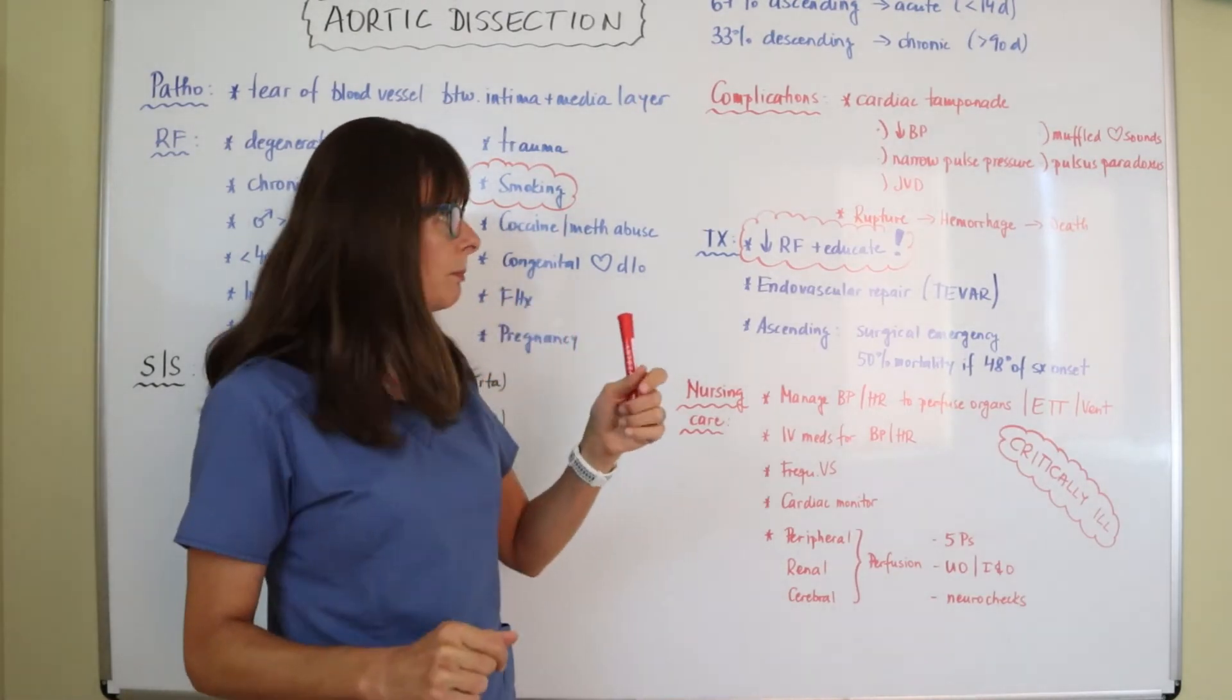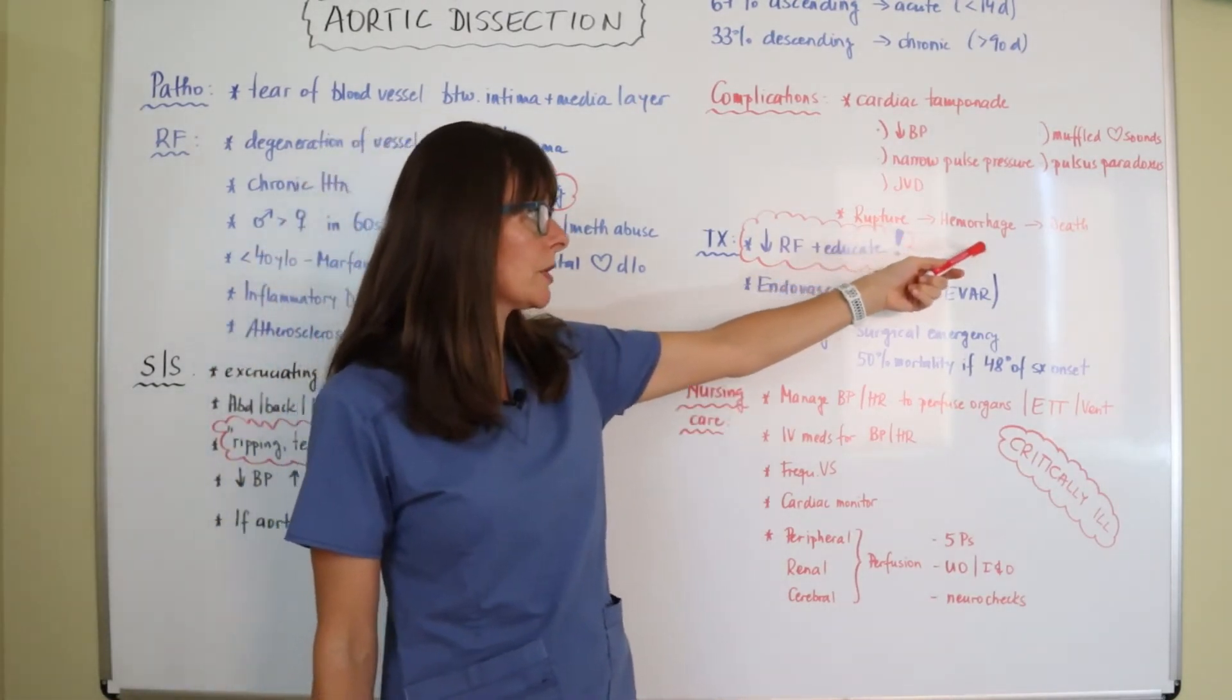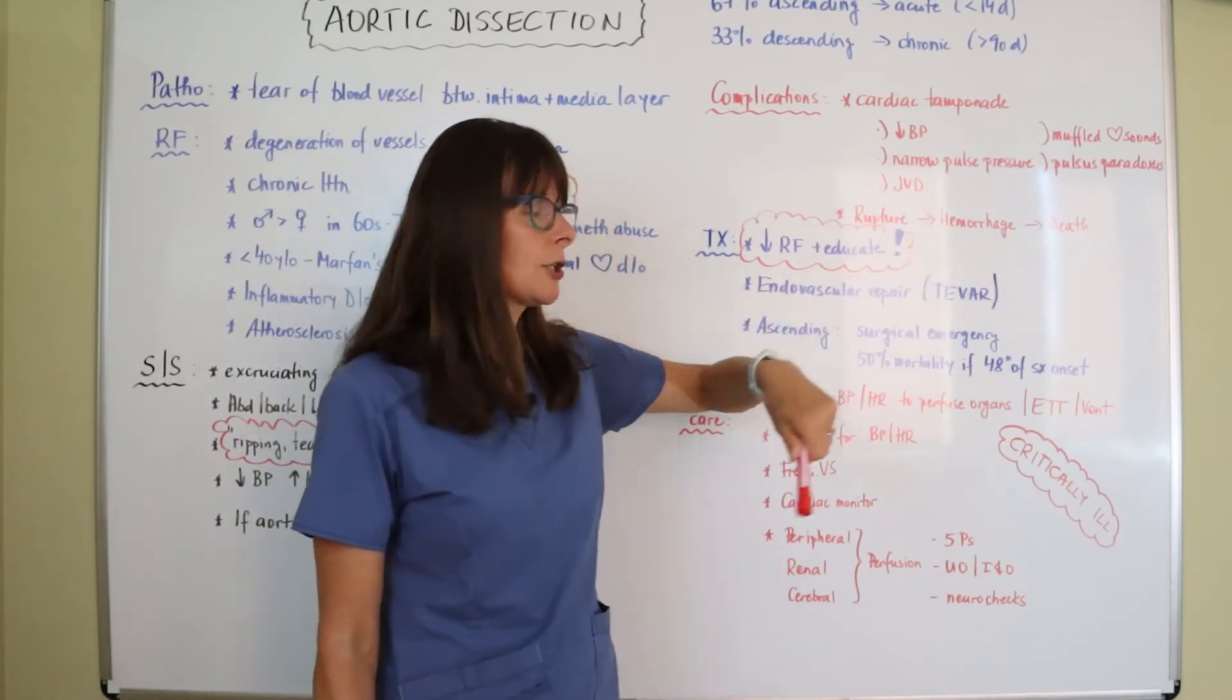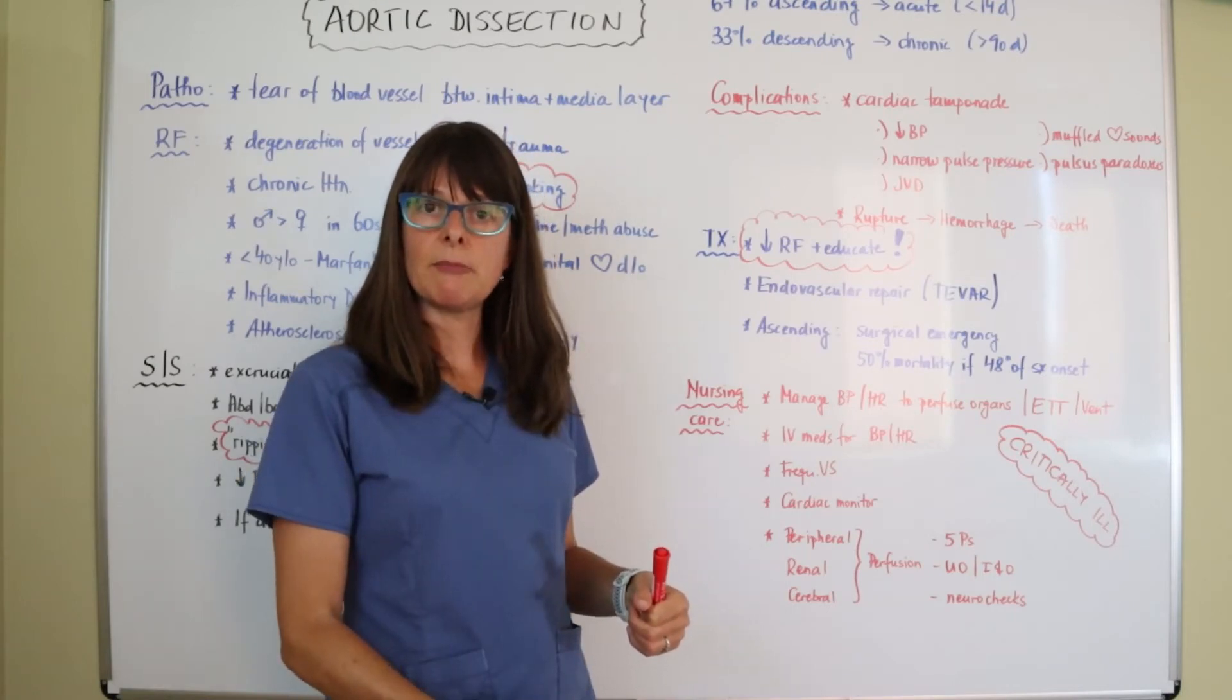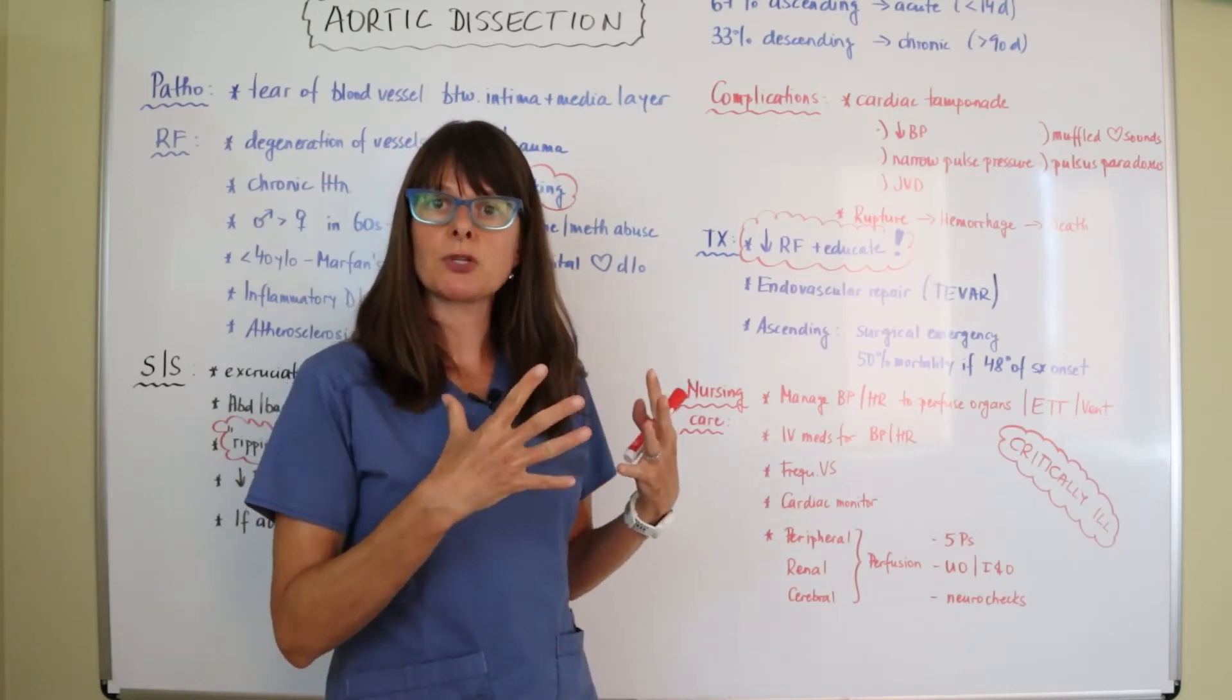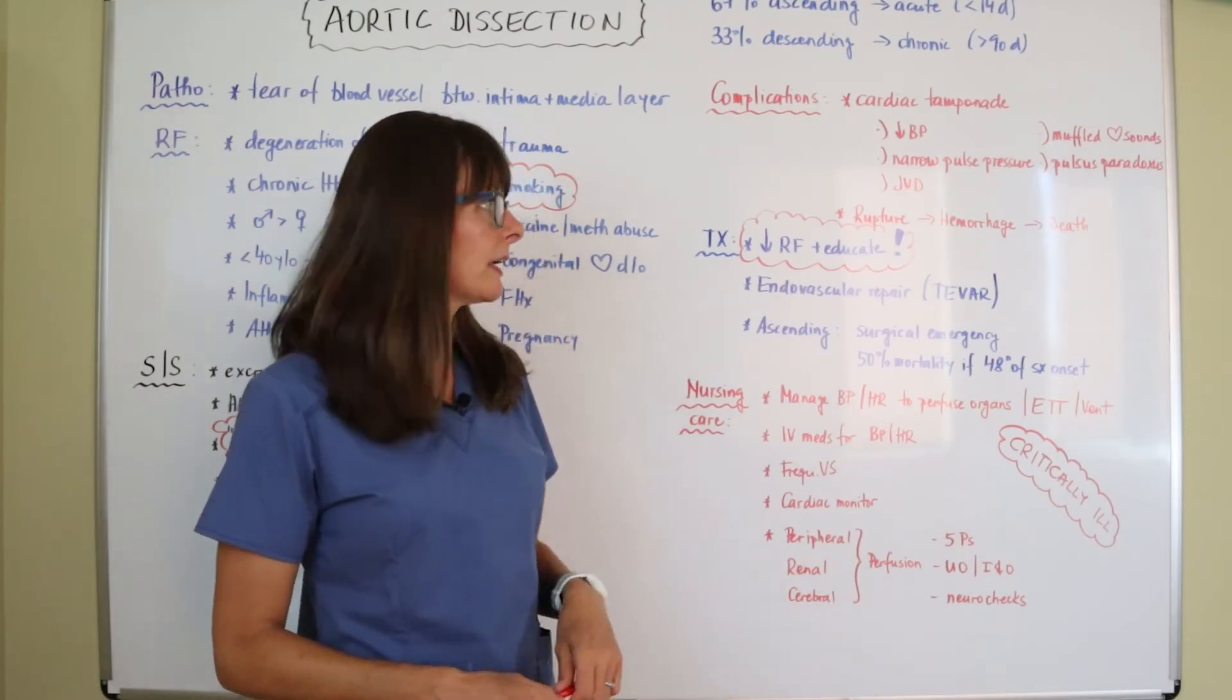Now if these layers continue to peel off, that whole blood vessel may rupture and then the patient will hemorrhage and this can quickly lead to death because there's high pressure here in the aorta because it's the main blood vessel. And if it ruptures, the patient will bleed out very quickly unfortunately.